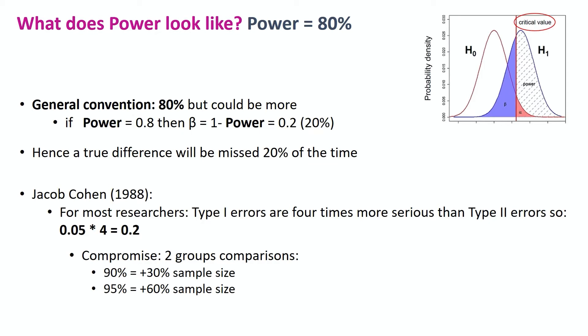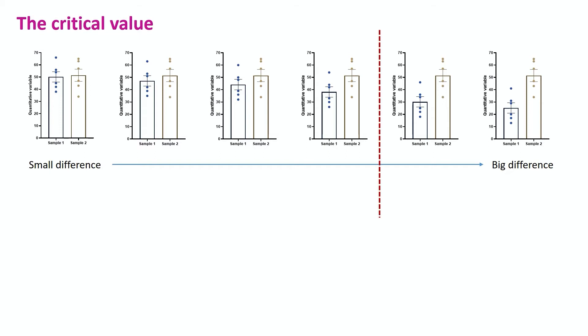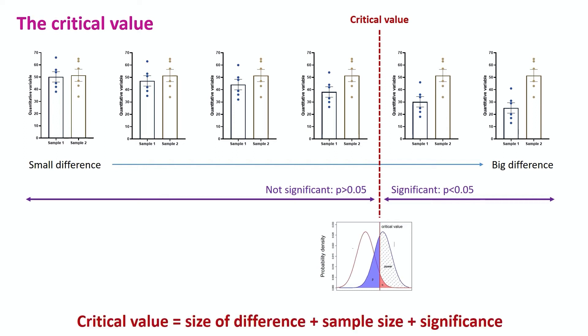Next, the critical value. When we compare sample means, we will always observe a difference, as means will never be exactly the same. But the question is, when do we call a difference significant and meaningful? So, a difference can be very small or very big. And somewhere, we have to draw a line beyond which we call the difference significant. And that line is the critical value. And that critical value is of statistical nature, as it is calculated using the information that matters, namely, the size of the difference, the sample size on which we build the confidence we have in that difference, and what we choose to call significant.